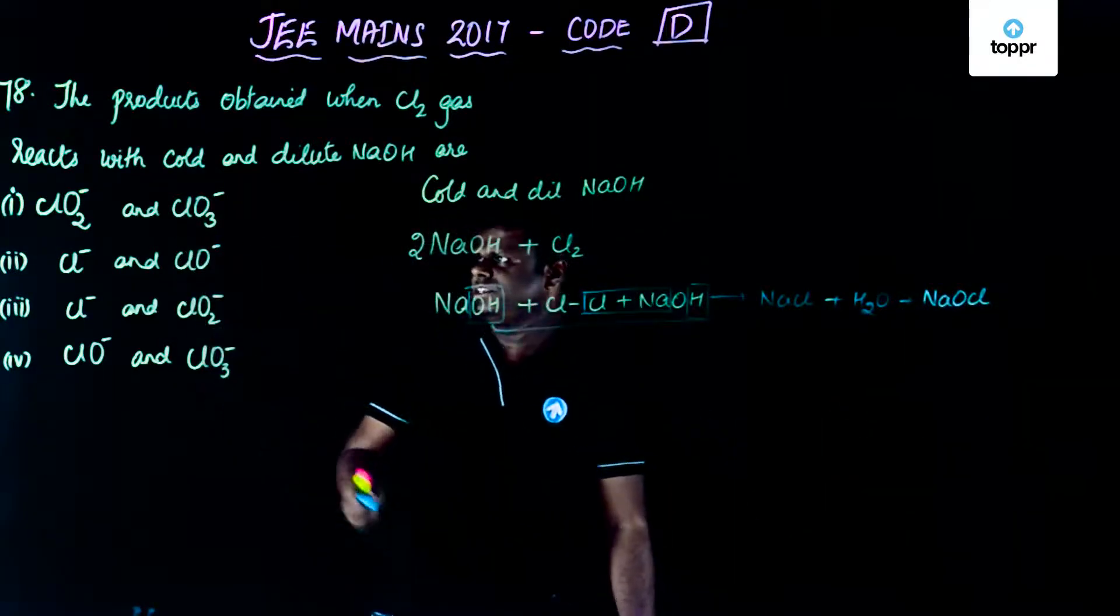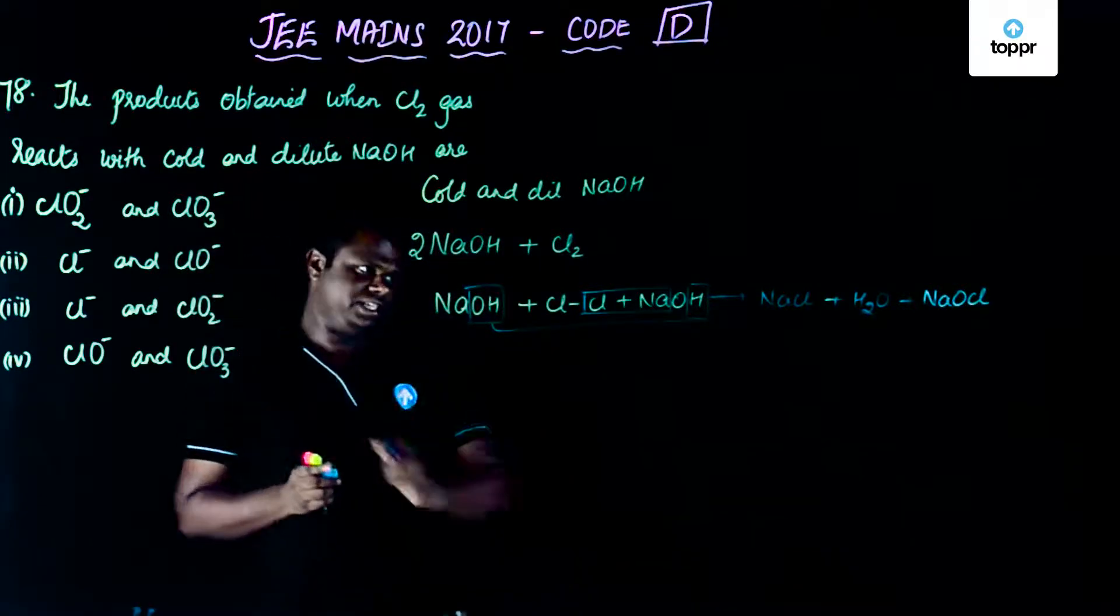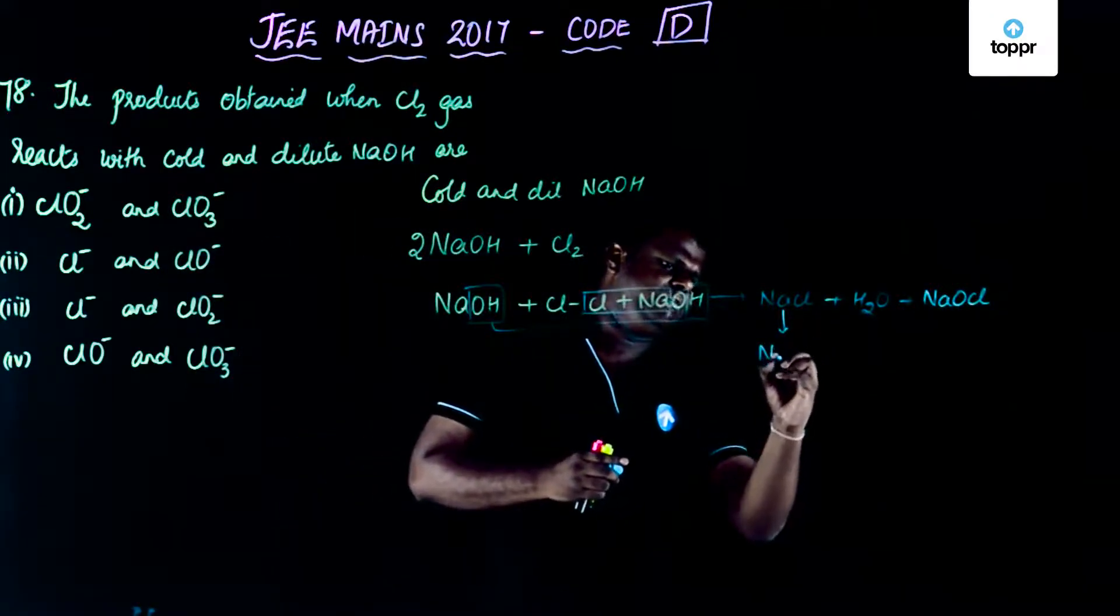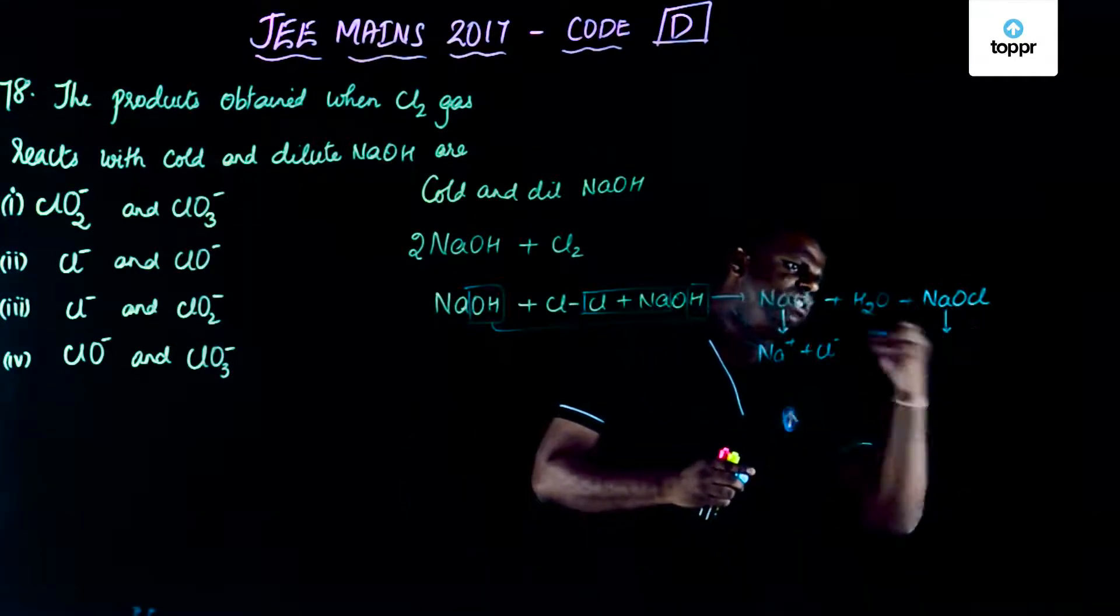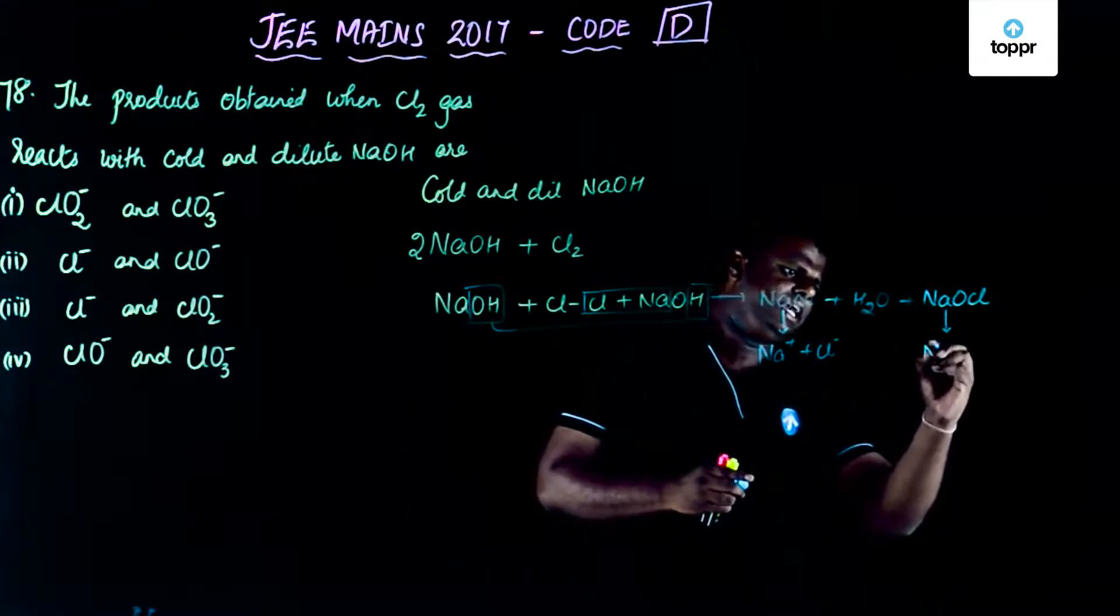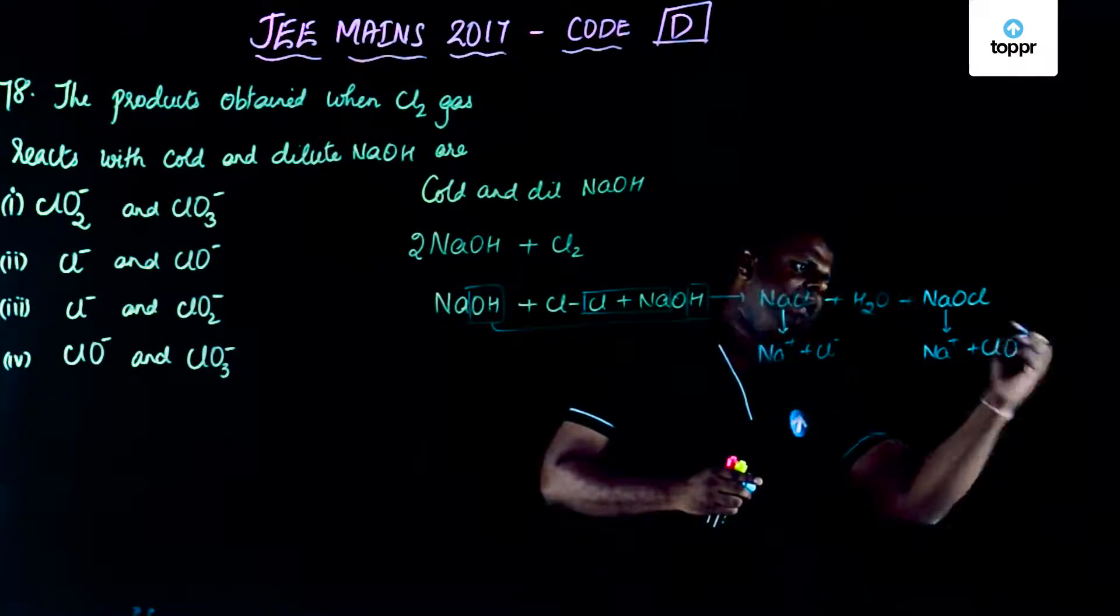As per the need of the question, we need to find out the ions which are there. So NaCl would ionize giving Na+ and Cl-, and NaOCl would be something like Na+ plus ClO-.